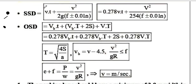We start with Stopping Sight Distance (SSD). The formula is V×T + V²/2G(F±N), where V is the velocity, T is the reaction time of the driver, G is gravity, F is the friction coefficient, and N is the slope. When using downward slope or upward slope, the plus or minus symbol is applied accordingly.